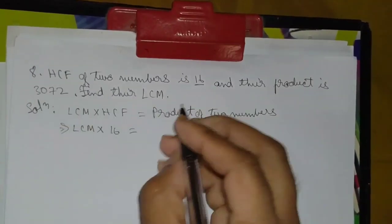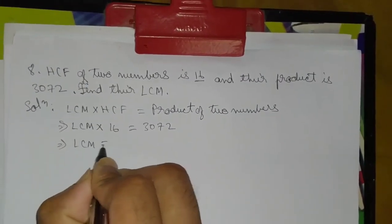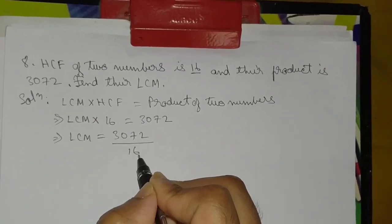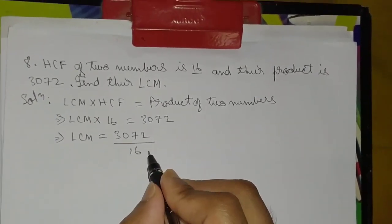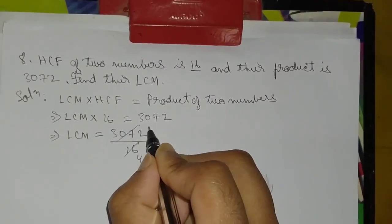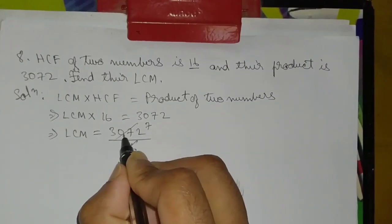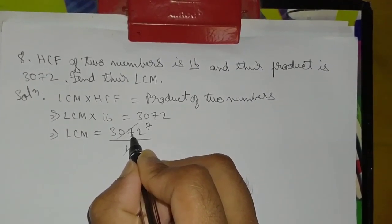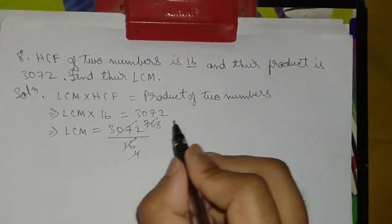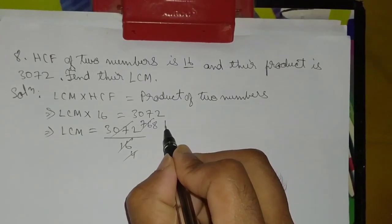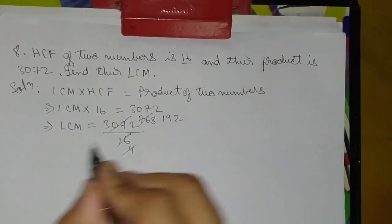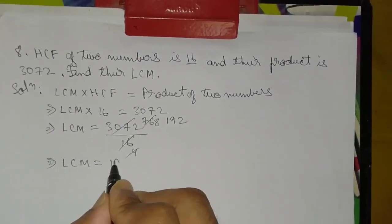The product is three thousand and seventy two. LCM equals three thousand seventy two divided by sixteen. Dividing, we get: LCM is equal to one hundred and ninety two.